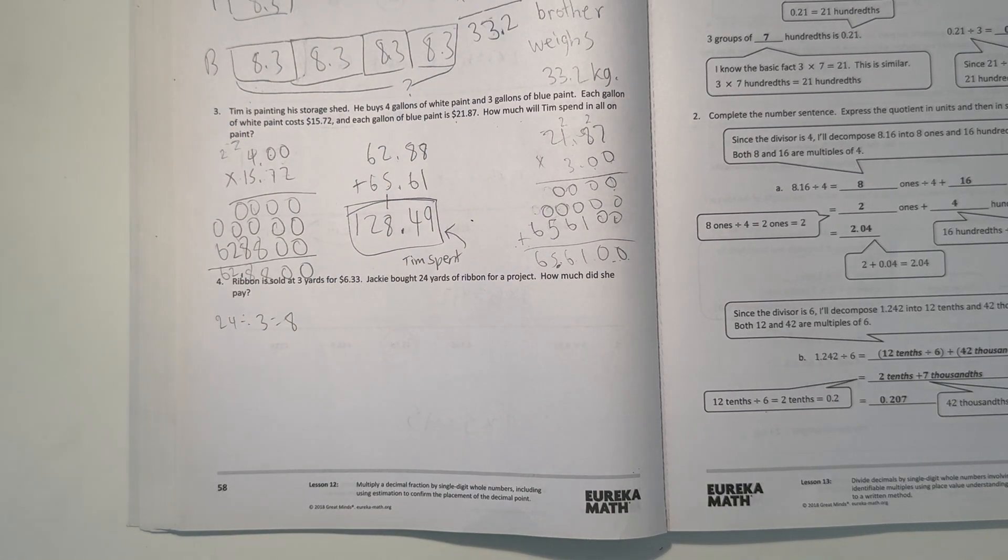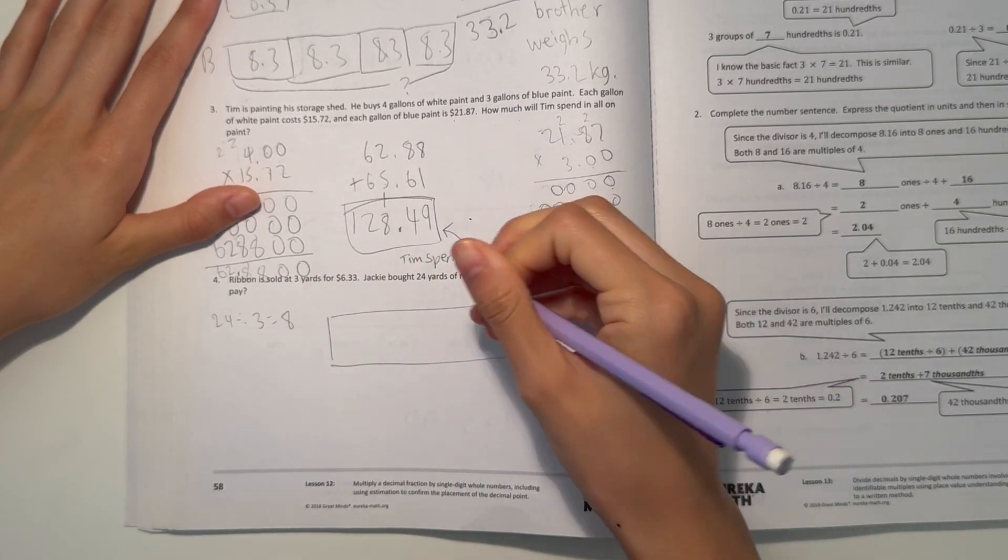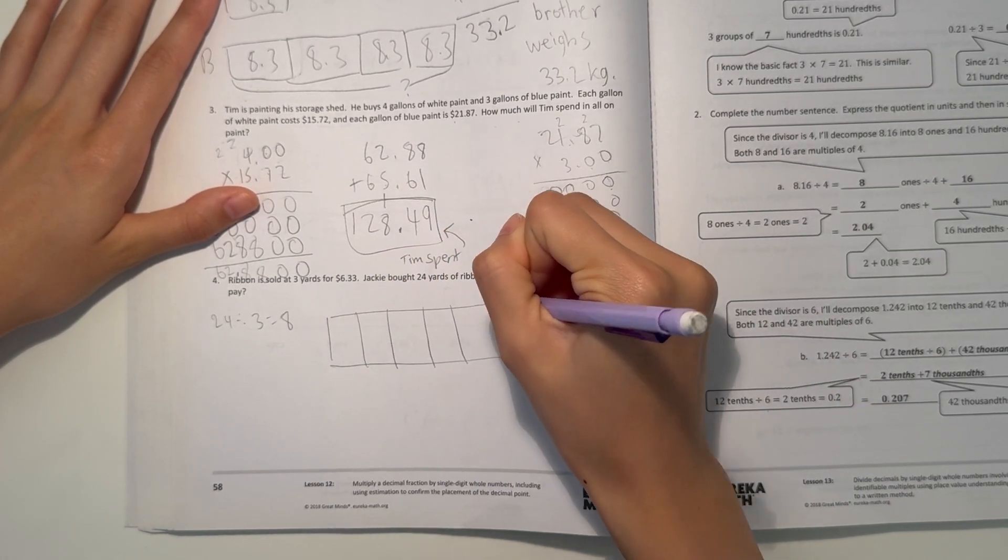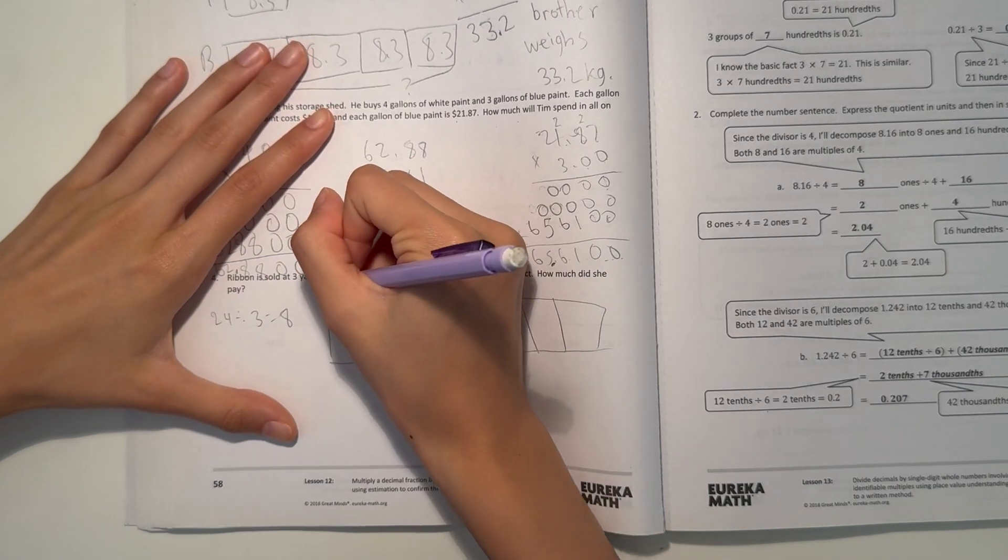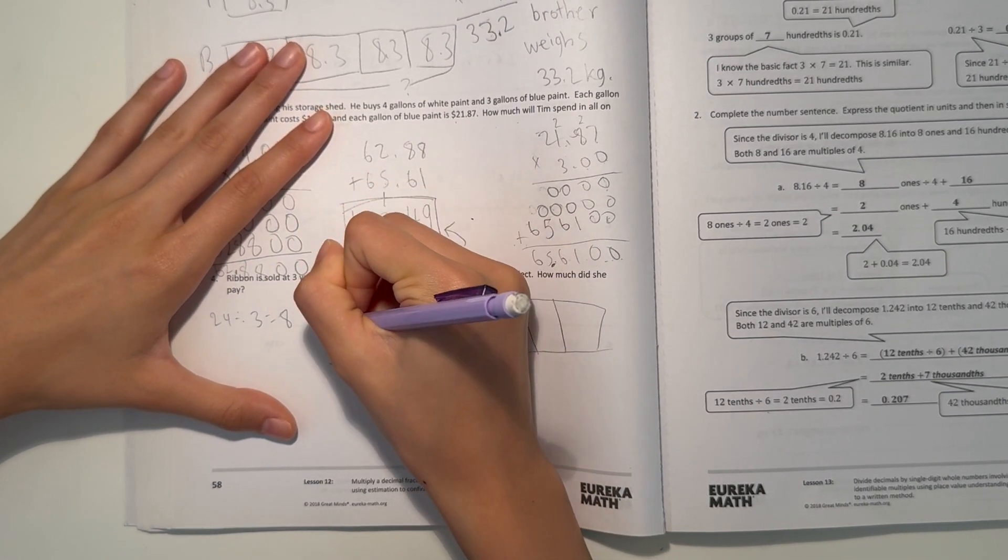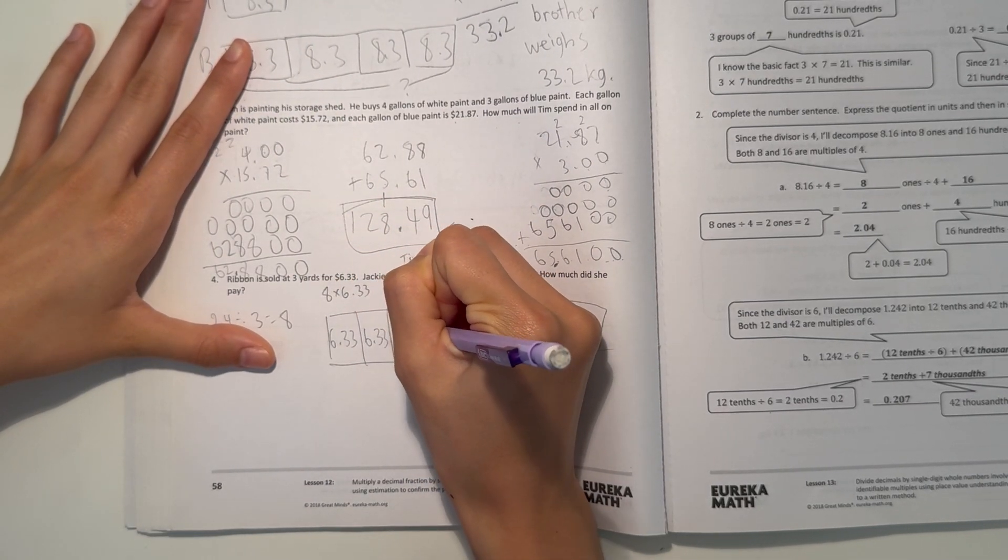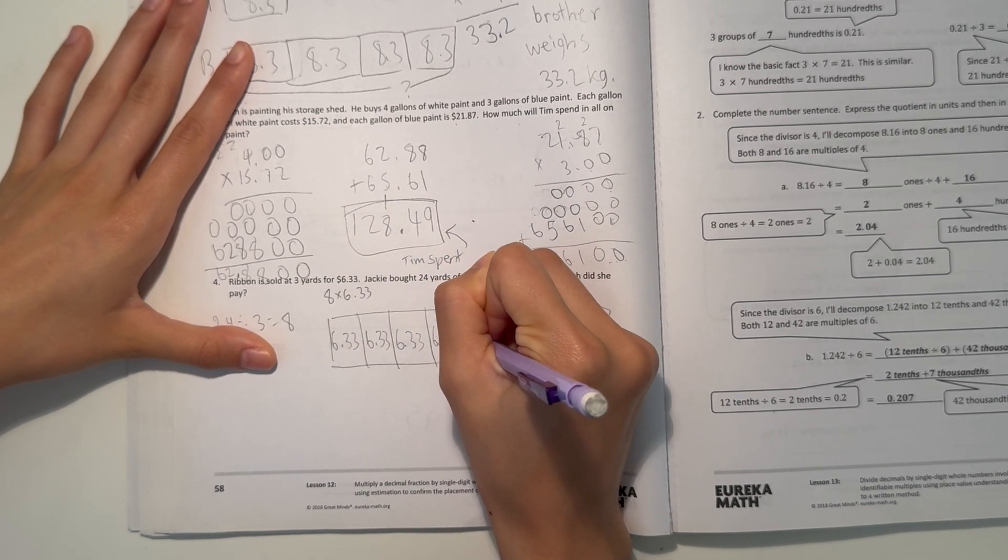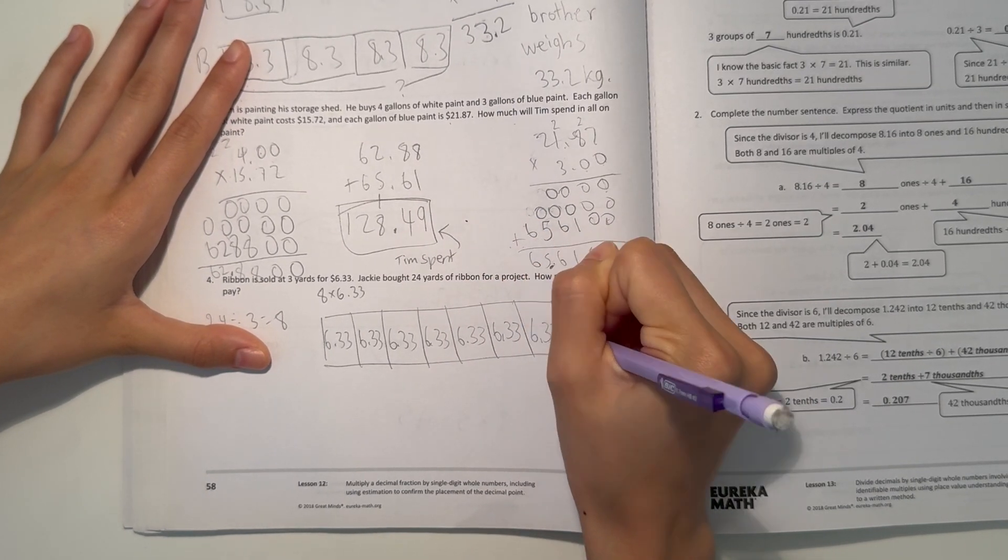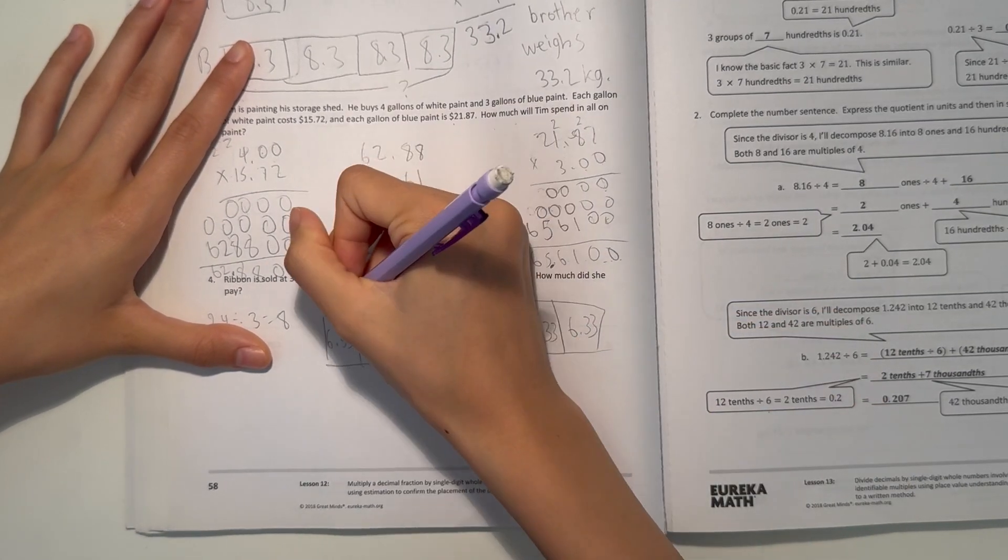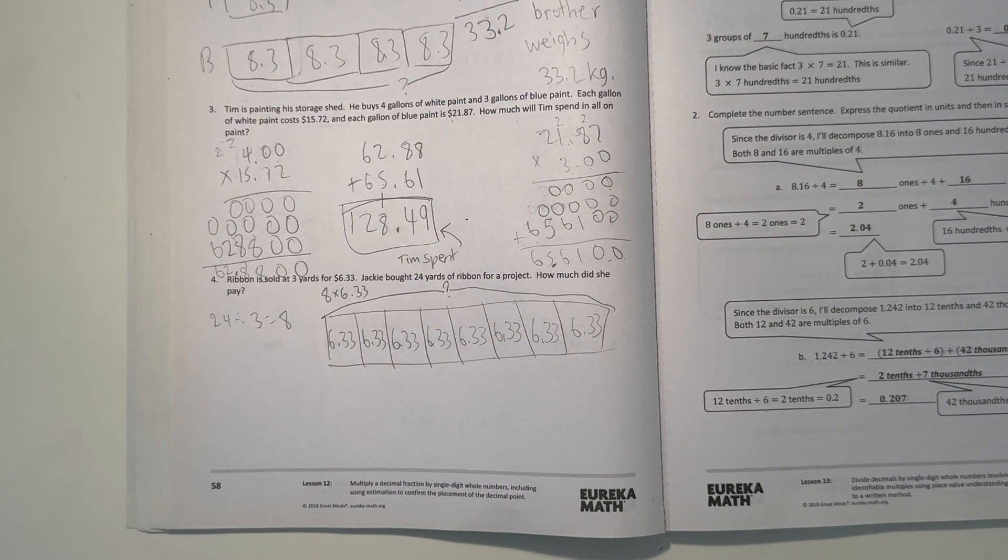So we can draw a tape diagram. So 6.33 times 8. So we have 6.33, 8 times. 3, 4, 5, 6, 7, 8. So we want to find out how much is the total.